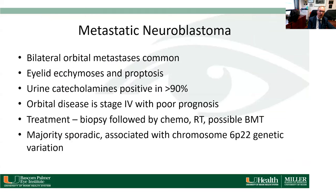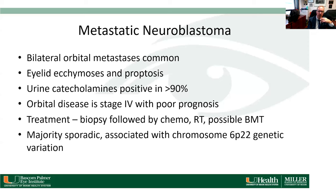Metastatic neuroblastoma often causes bilateral orbital metastases — unlike rhabdomyosarcoma, which almost never does. A characteristic finding is eyelid ecchymosis presenting with proptosis. Urine catecholamines are positive in a large number of these patients, so we always test for them. Orbital disease when patients present is usually Stage 4. Historically the prognosis has been poor but has improved with better chemotherapy and radiation regimens. There may be a chromosome 9p22 genetic variation associated with this disease.